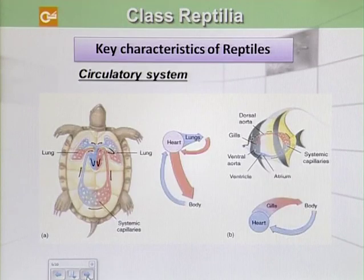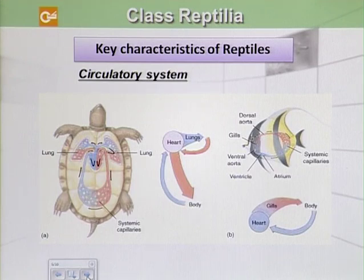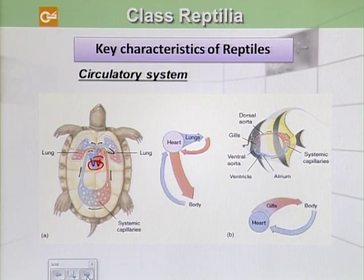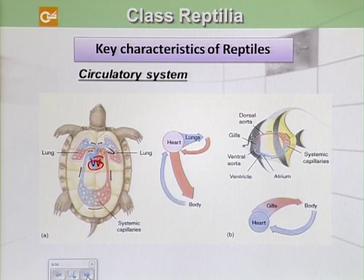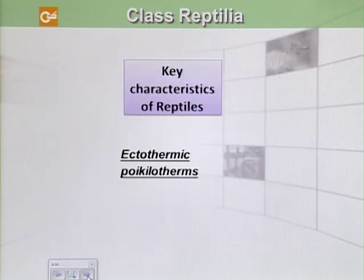Reptiles have a circulatory system more advanced than that of fishes and amphibians. In most reptiles, there is a septum between the ventricles, but in crocodiles the ventricle is totally partitioned, meaning they have a right atrium, a left atrium, and a fully divided ventricle, making their heart more like that of mammals.